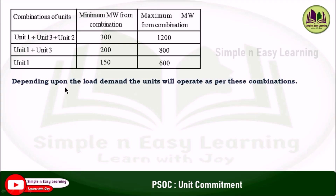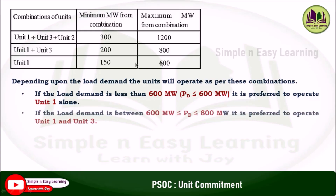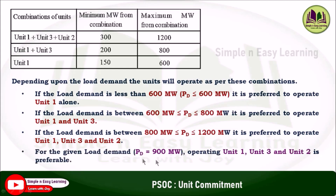Using these combinations, we can conclude: if load demand is less than 600 MW, operate unit 1 alone; if load is between 600 and 800 MW, use unit 1 and unit 3; if load is between 800 and 1200 MW, operate unit 1, unit 3, and unit 2 together. Since the given power demand PD is 900 MW, operating units 1, 3, and 2 together is preferable.